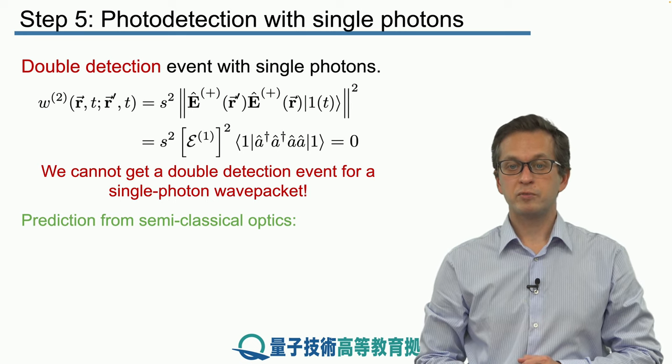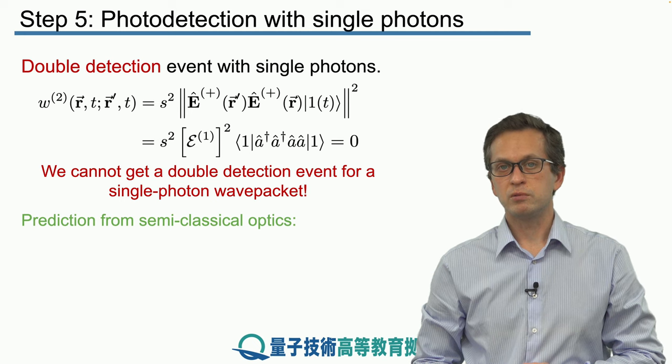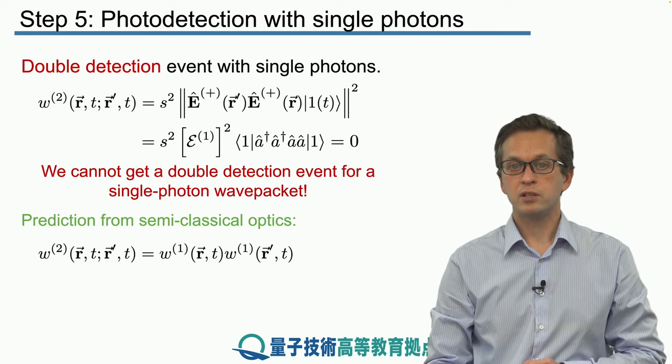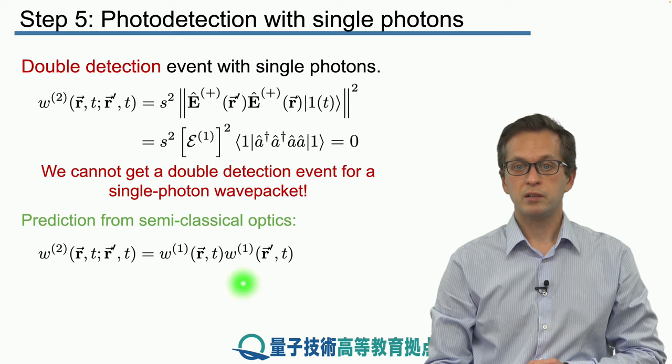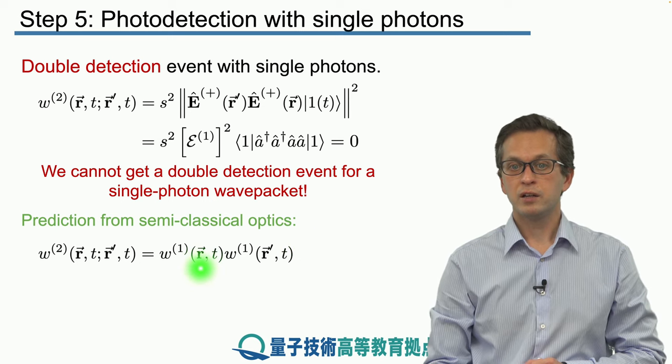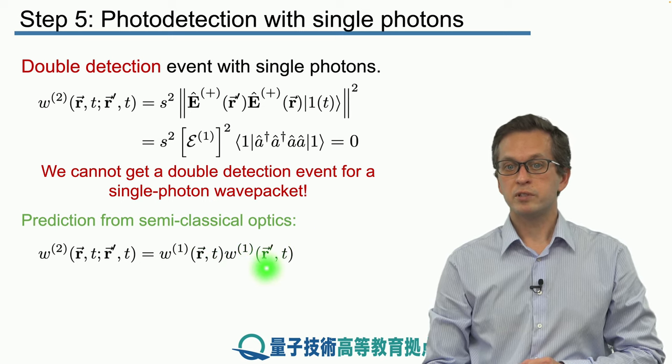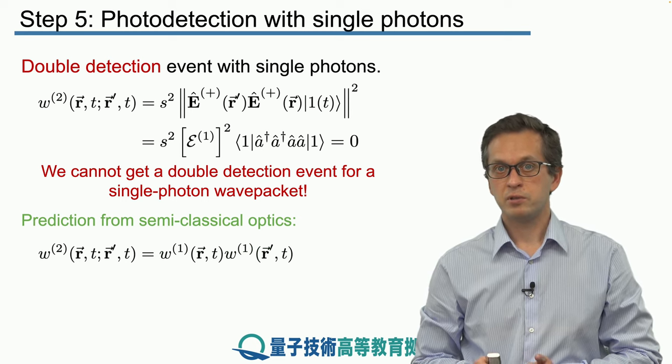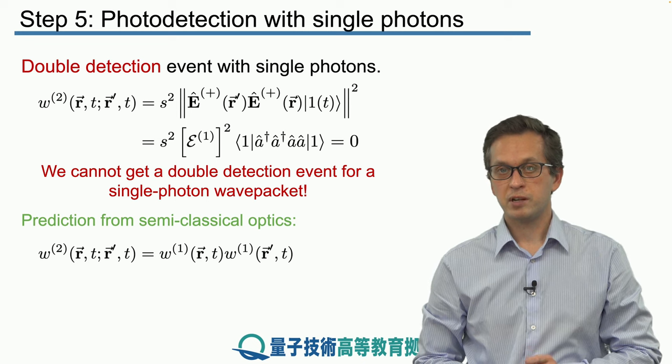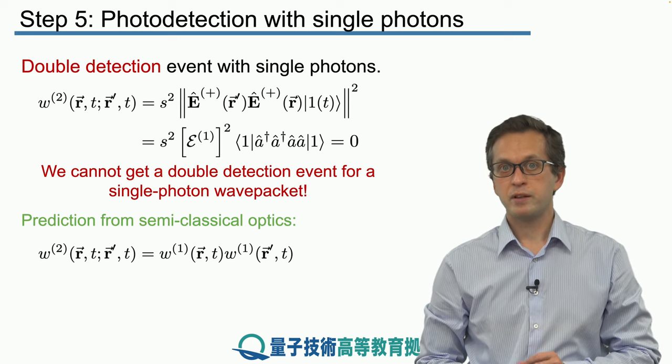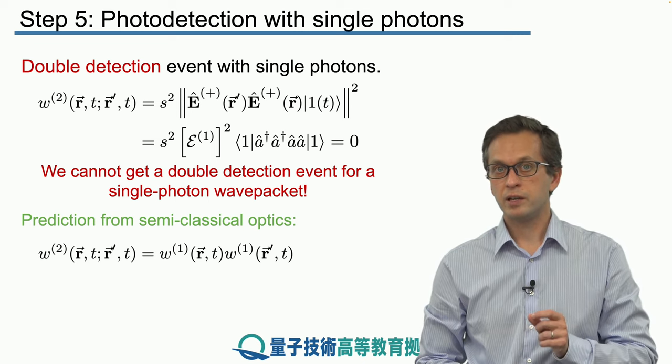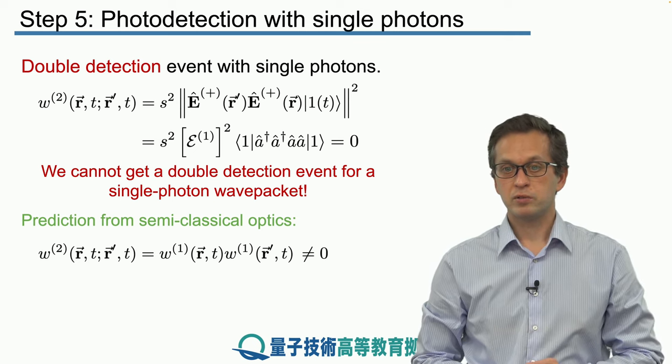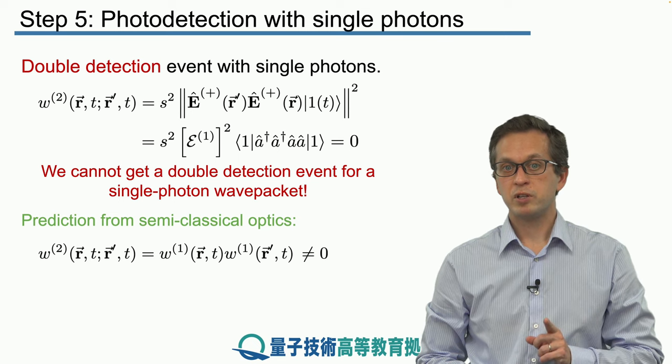Now, what's the prediction from semi-classical optics? We said that w2 is just the product of the w1s for each individual detector, w1 at position r and w1 at position r prime. So in other words, even when we decrease the amplitude of the electric field in the semi-classical model, we still have a finite probability that we will detect a double detection event. And in fact, with single photon sources, this effect has been observed.